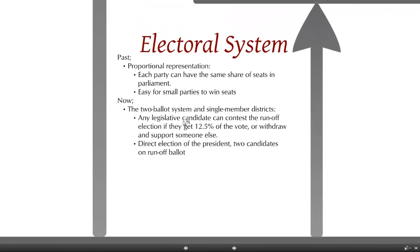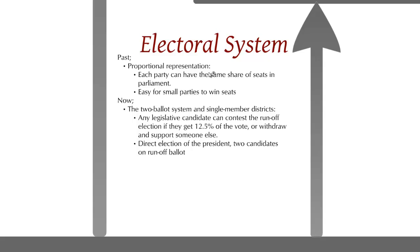Typically, the electoral system in the past used to be a system of proportional representation. Each party could have the same share of seats in parliament, and it was easy for small parties to win seats. So if we look at the Third and Fourth Republic, that was the way things were done. That's partly the reason why these earlier regimes so often produced deadlocks.